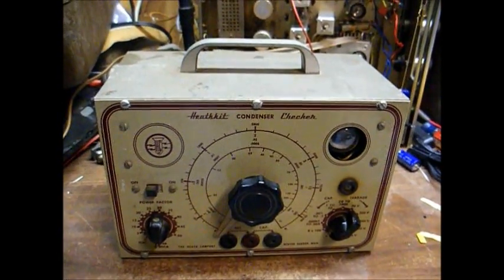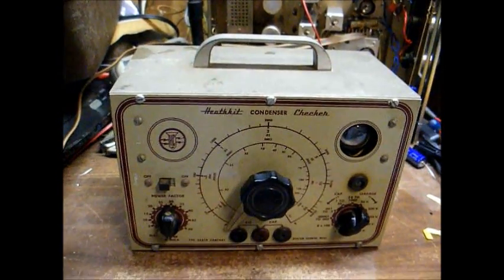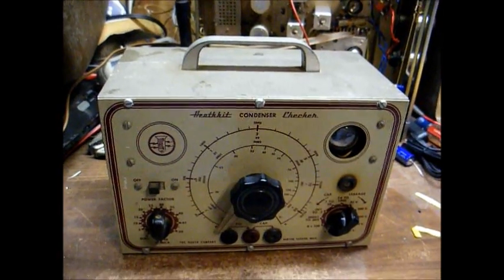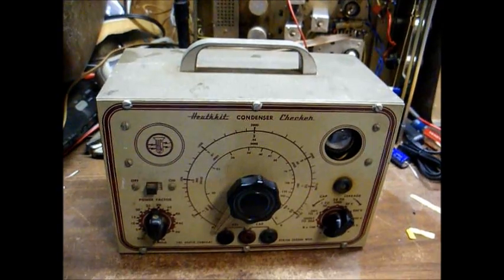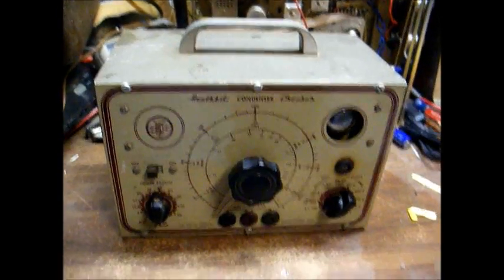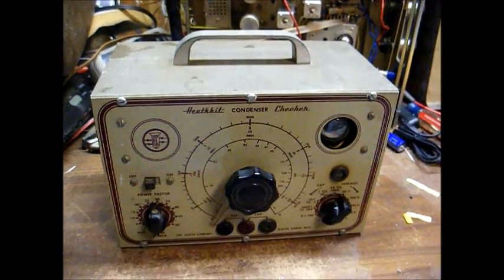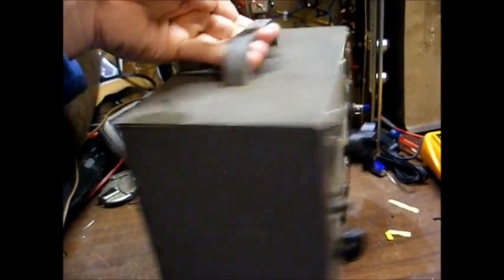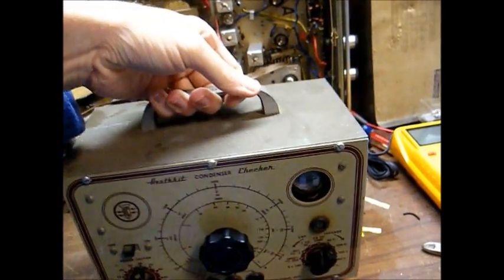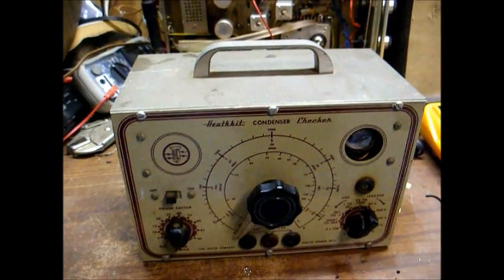Here we have a Heathkit condenser checker, or capacitor checker in modern terms. This is a model C2 from probably around 1950-51. I got this off of someone on the ARF forum, and as you can see someone has cut the power cord, but it looks to be in pretty good shape cosmetically. There's a few little scratches on it. Now we'll open this up and see what the inside looks like and try to get it back in operating condition.